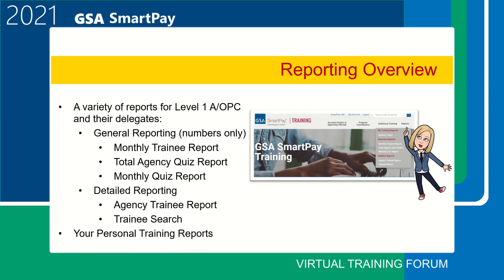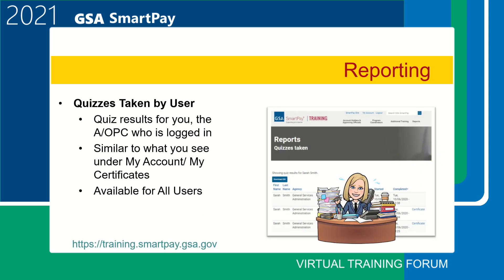The GSA SmartPay Online Training site offers reports on training taken. All users have access to a report for their personal training achievements. Approved Level 1 AOPCs have access to reports that run results only for those users who have the same agency listed on their account. The reports offered can be exported to CSV for download and manipulation in Excel. There are two types of reports: general reporting, which returns numbers only, and detail reporting, which provides specific user information.